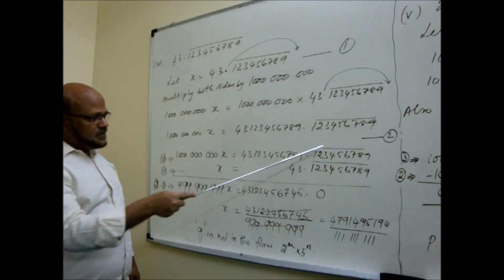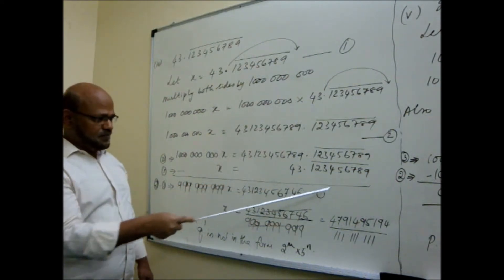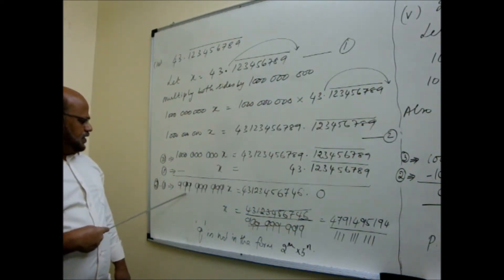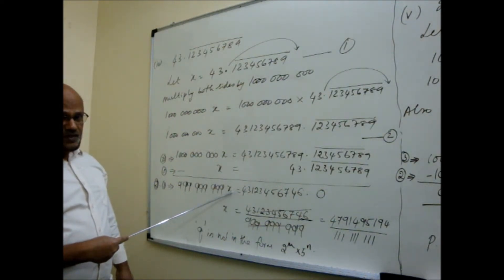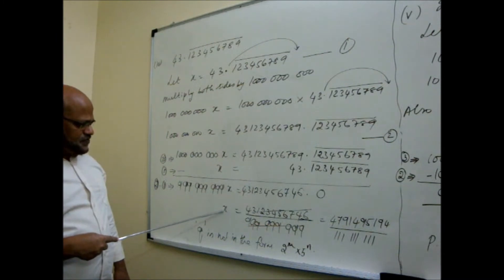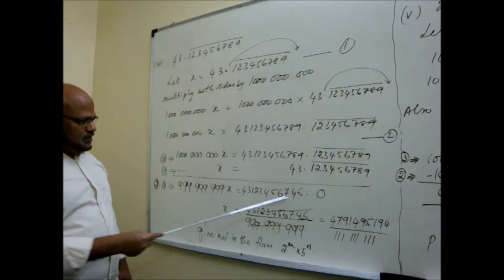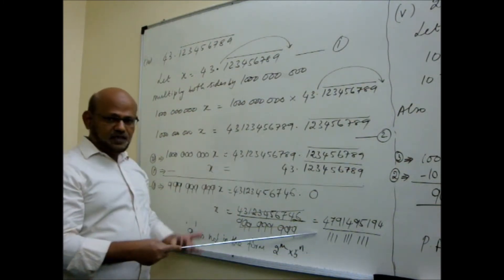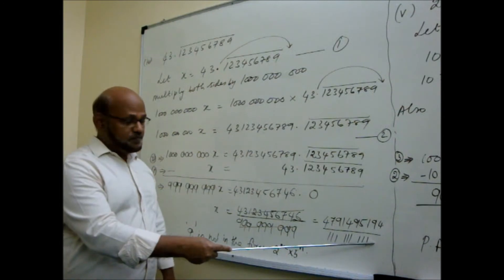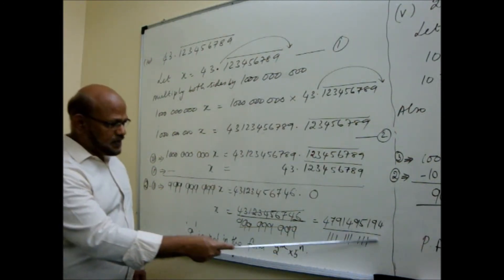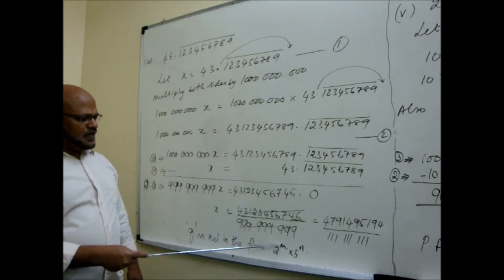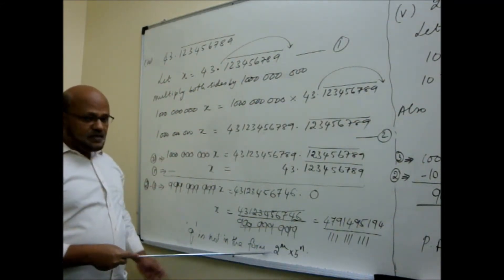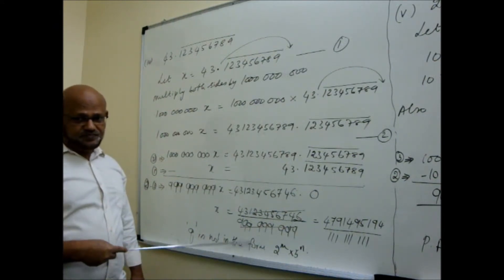Now arrange equation 2 and equation 1. Write equation 2 above and equation 1 below. Means 1 billion X is this number and X is equal to this number, arrange in order. You will note down this repeating factor coming in the same column and arrange. So when I subtract this, what happens? This repeating factor gets eliminated, become 0. Remaining here subtracted and written. Then you are finding here you are getting what? 999 million 999 thousand 999 X coming. Whatever it is, transpose and find the value of X. You get this fraction. Simplify if possible, simplify by 9, get like this.